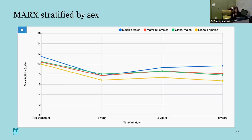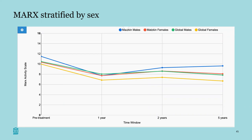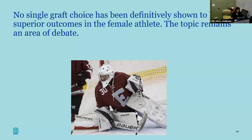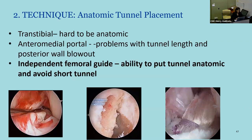I think females have had poor outcomes and higher risk of retear historically because they were getting grafts that were too small. When we look back at the literature on hamstring tendons used 10–15 years ago, they were using six, seven, or eight-millimeter grafts, and that's why they had higher risk of retear and poor outcomes. We need to change that. There is no single graft choice definitively shown to have superior outcomes — it remains a topic of debate.